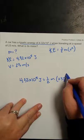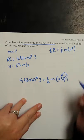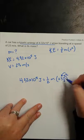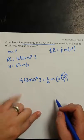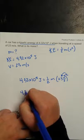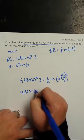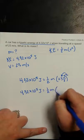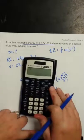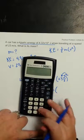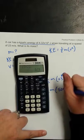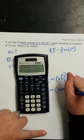Okay, remember I need to distribute that square to both 23 and to the units. So I've got 4.32 times 10 to the fifth joules is equal to one-half m times 23 squared is 529 meters squared per seconds squared.